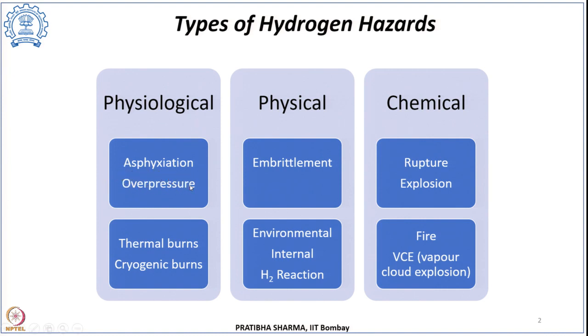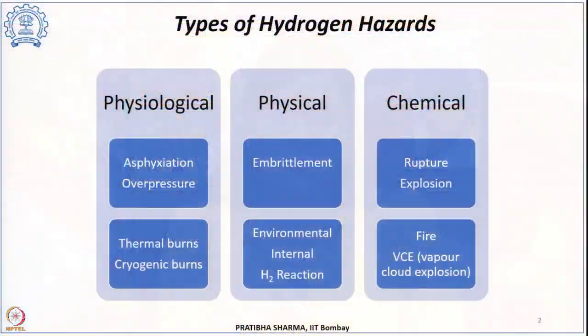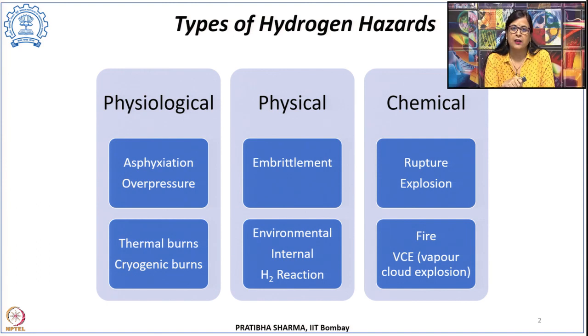The blast waves which come because of explosions — resulting from over-pressurizations — and the duration of exposure can result in several different types of injuries or organ failures. Thermal burns, which are because of the heat released and the emitted heat radiations from a fire due to a hydrogen accident, can lead to injuries to the person, damage to property, and many other losses. These thermal burns depend upon several parameters like how long the exposure has been, what was the burning rate, what was the environmental temperature and pressure, and what was the burning surface area.